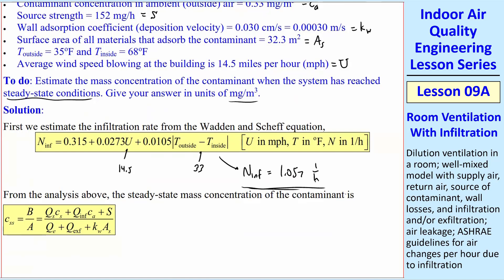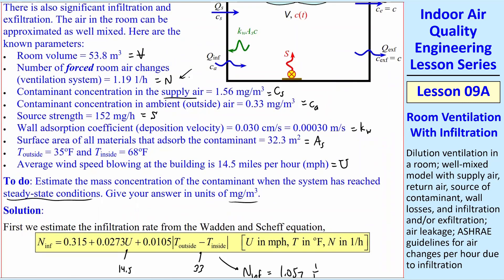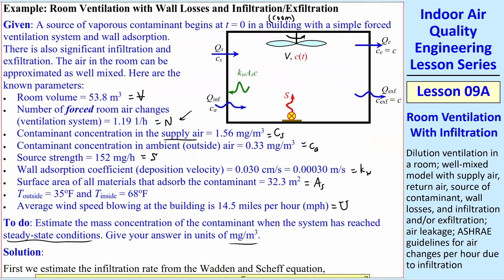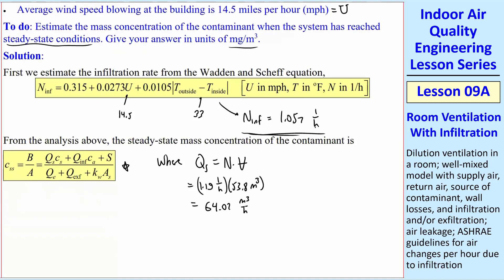Interestingly, in this case, 1.057 is pretty close to N itself. So you're putting almost the same amount of air forced in as you are getting naturally from the infiltration. We have to calculate Q_S is equal to N times V. And that turns out to be 1.19 per hour times 53.8 meter cubed. So that's equal to 64.02 meter cubed per hour.